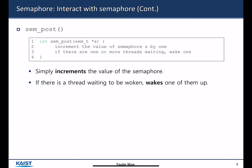sem_post is also an atomic function. It increments the value of the semaphore s by one, and if there are one or more threads waiting, it wakes one of them. So it simply increments the value of the semaphore.